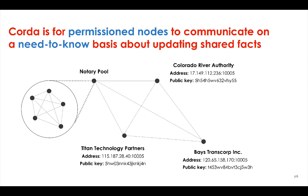So when real businesses strike legal agreements, they need to strike these agreements with legally identifiable counterparties, and not just with pseudonymous public keys. And equally, real businesses need to keep the details of their transactions private from third parties. This is strongly desirable for strategic, but also often legal reasons. And so, to meet the needs of businesses, Corda networks are architected differently.